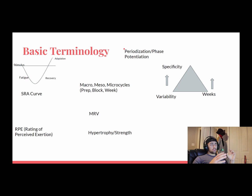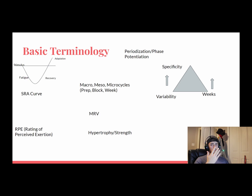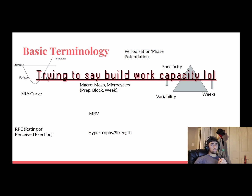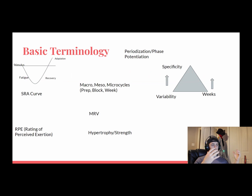Periodization, or phase potentiation, is about allocating a block or mesocycle to one specific purpose. For example, if you're in the off-season or just starting a prep, you'd want to do a hypertrophy block or volume block to build a really good base and foundation so you have better adaptation to what comes later. Then as you're getting ready for a meet, you'd go into a strength block, dropping the volume and bumping up the intensity.